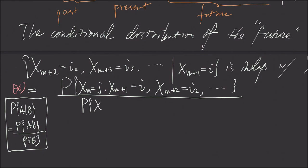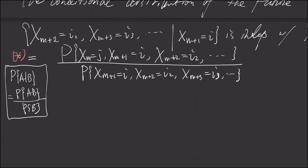X sub M plus 3 is i3, etc. Now we're going to further use the conditional probability as used in the Bayesian formula. So we rewrite the top and the bottom using conditional formula again, this time conditioning on this.